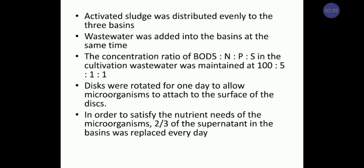The activated sludge was distributed evenly into three basins, and the wastewater was added to the basins at the same time. The concentration ratio of BOD5 : nitrogen : phosphorus : sulfur in the cultivation wastewater was maintained at 100 : 5 : 1 : 1. The discs were rotated for one day to allow microorganisms to attach to the surface of the discs.